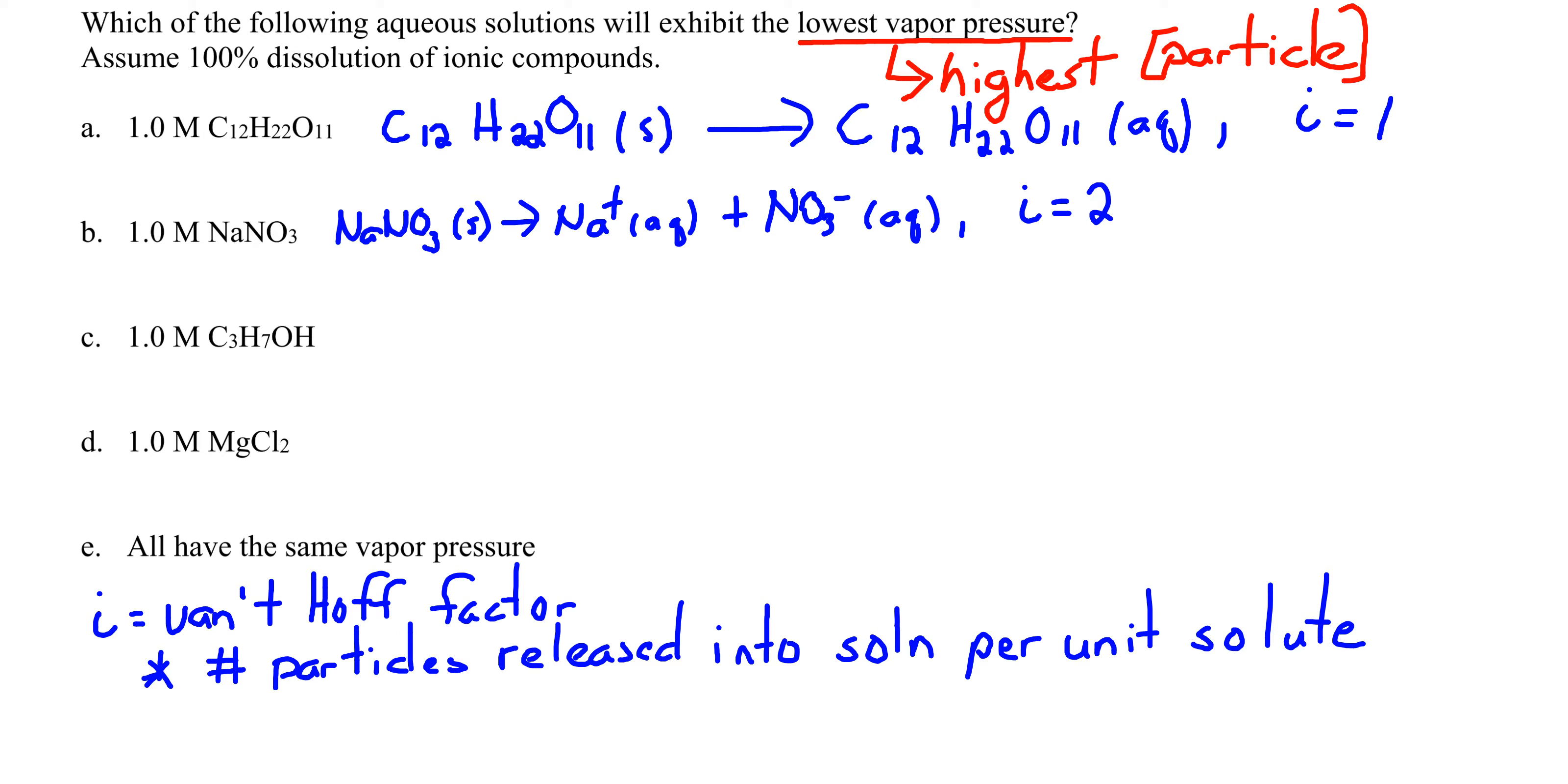That can be represented by I, the Van't Hoff factor, with an I value equal to 1. The Van't Hoff factor is the number of particles that are released into solution per unit of the solute. For a molecular compound, I is equal to 1.